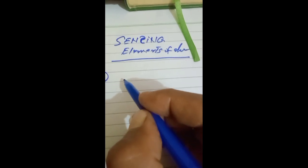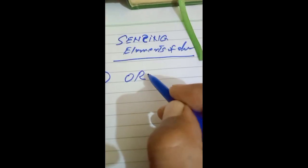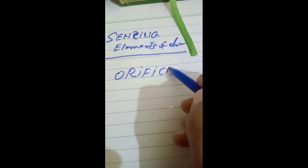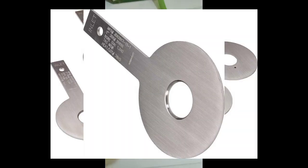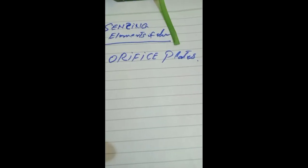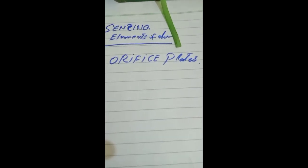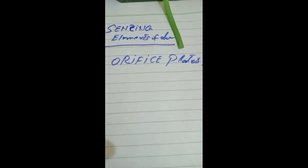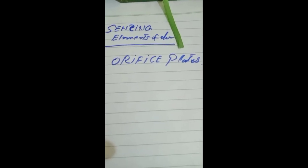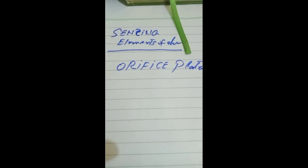The most important and most used element in the industries is the orifice plate. An orifice plate is a device used for measuring flow rate, for reducing pressure, or for restricting flow. In other words, the orifice plate is a metal disc with a concentric hole in it, which is inserted into a pipe carrying the flowing fluid.